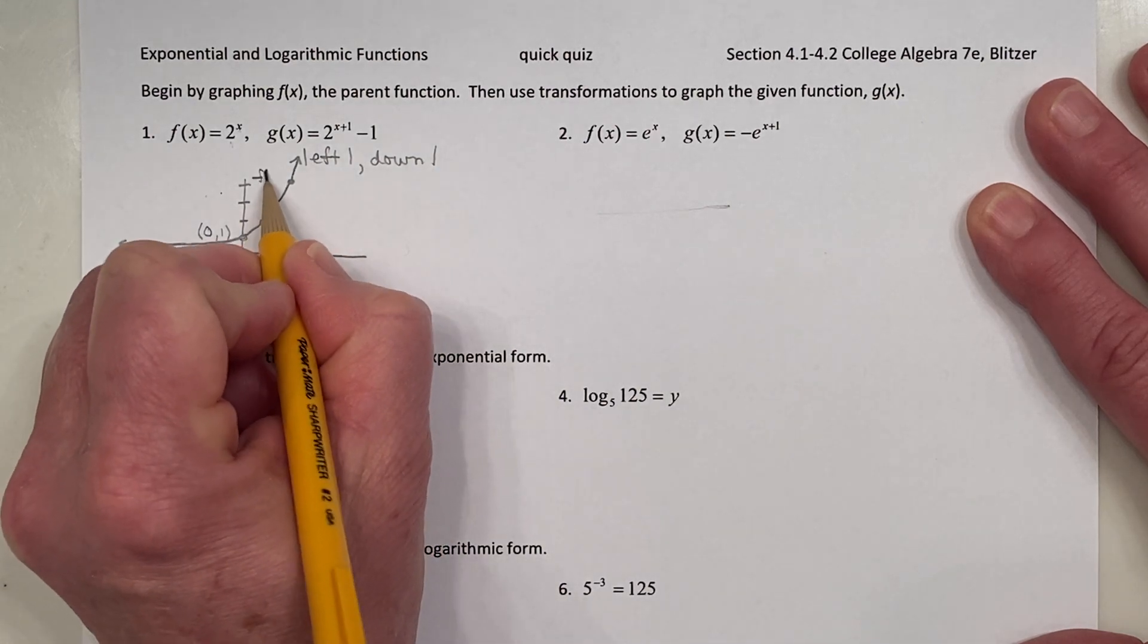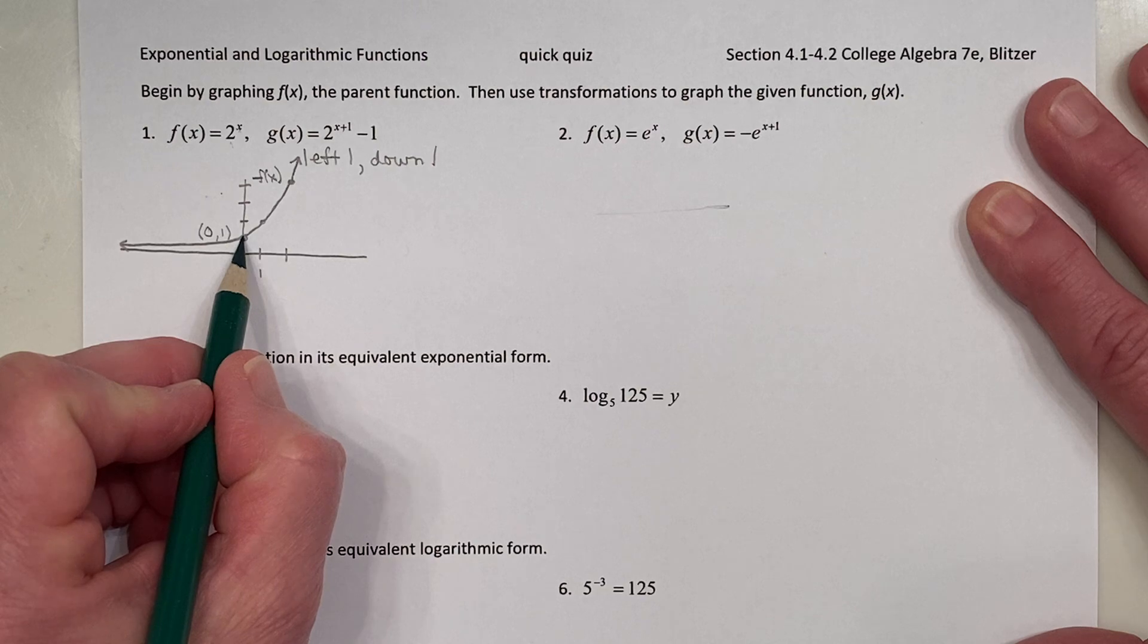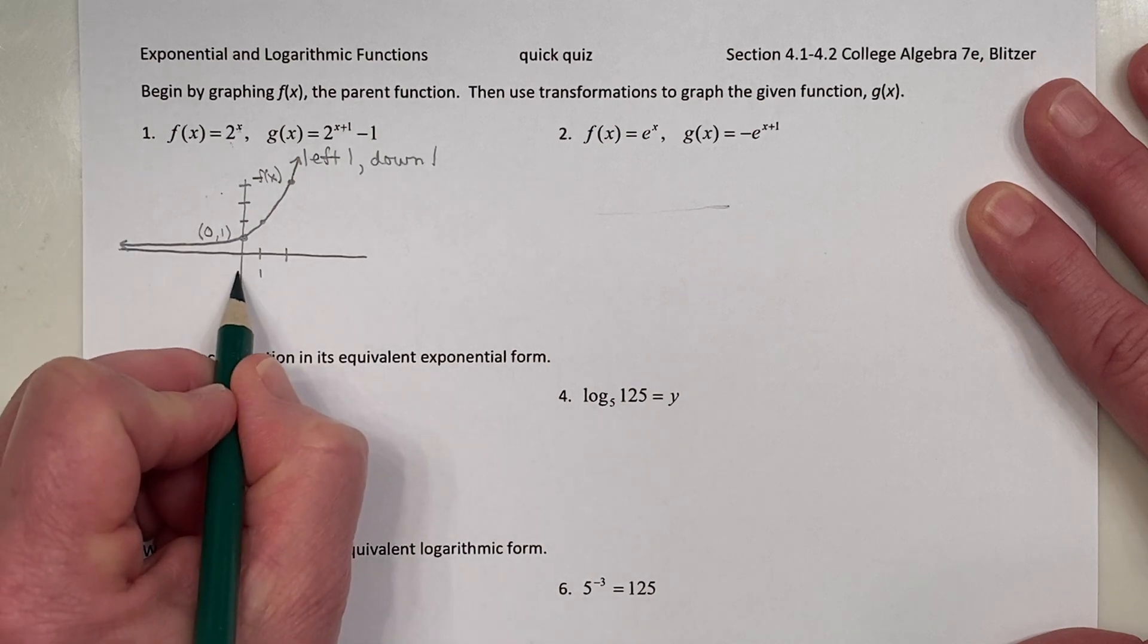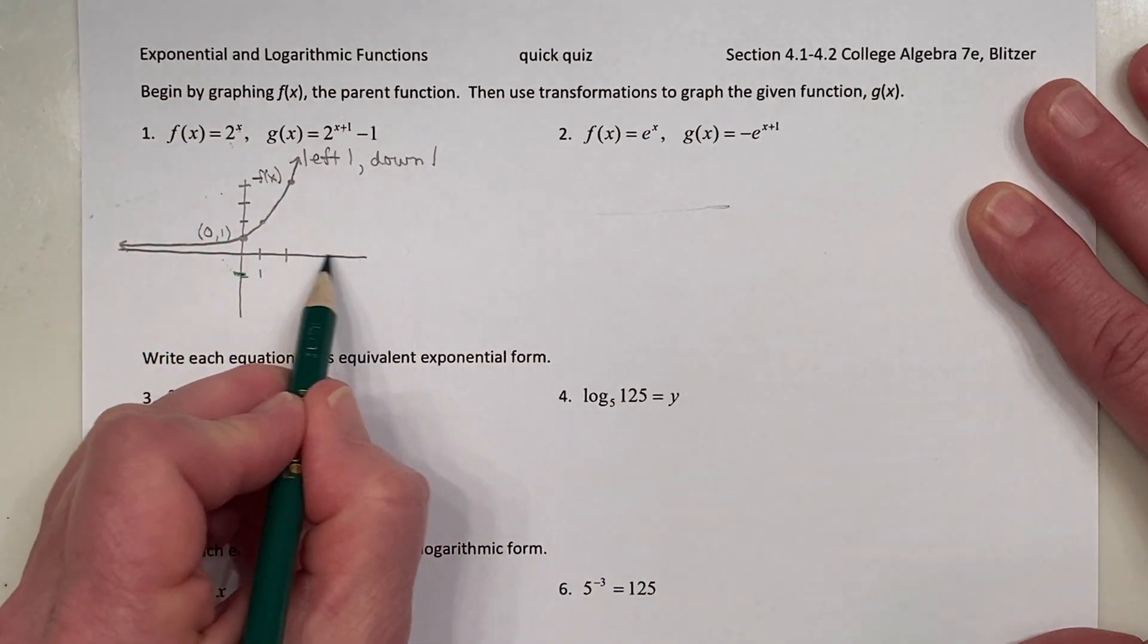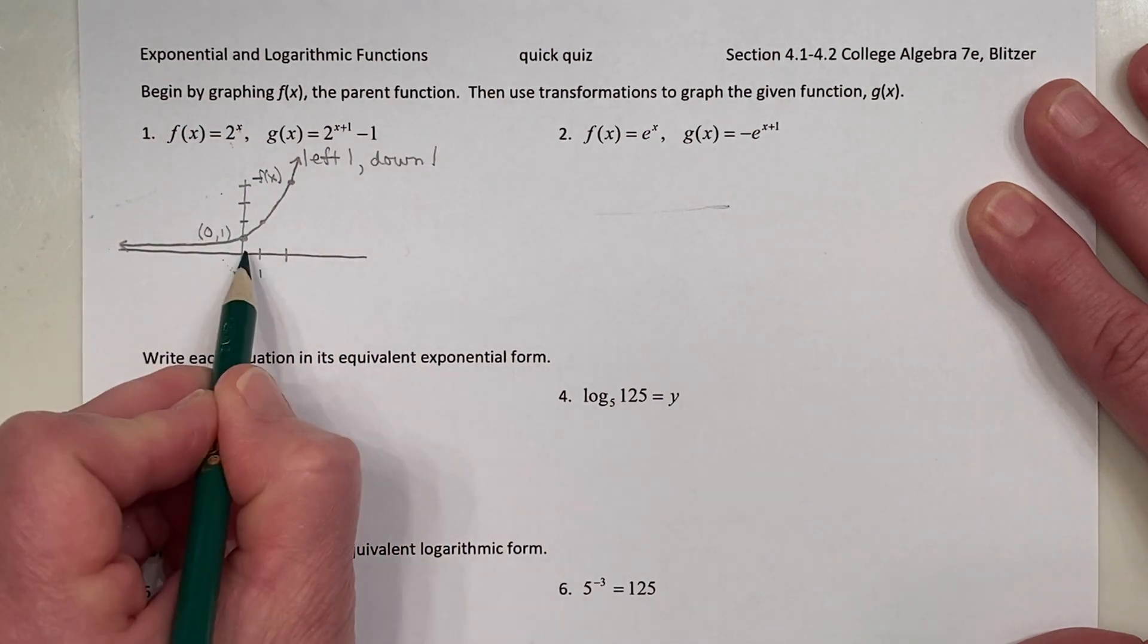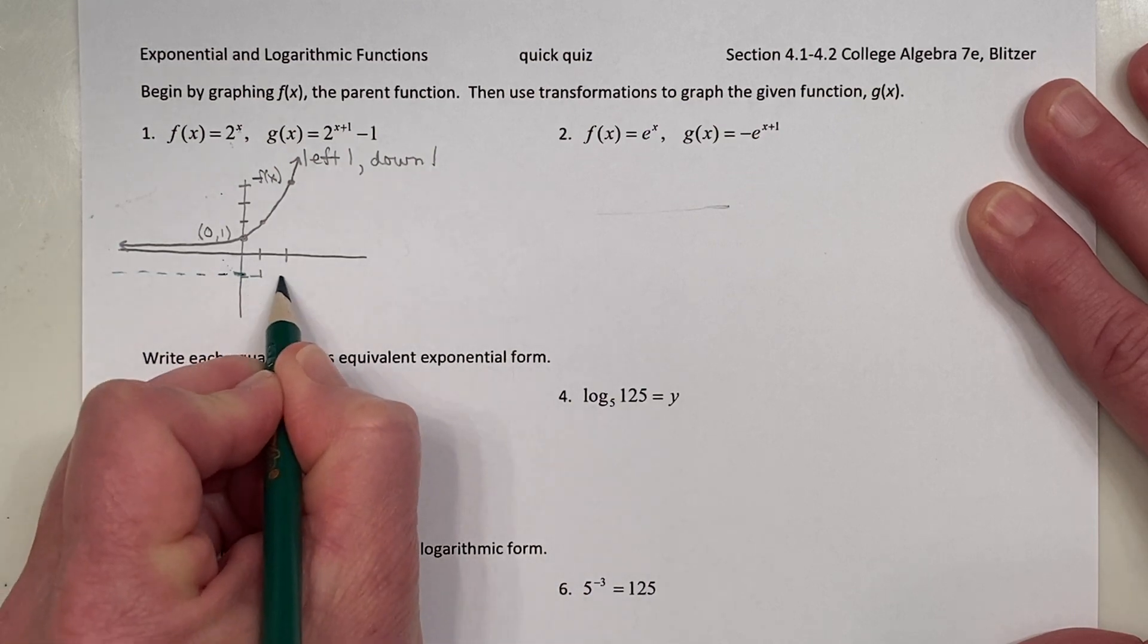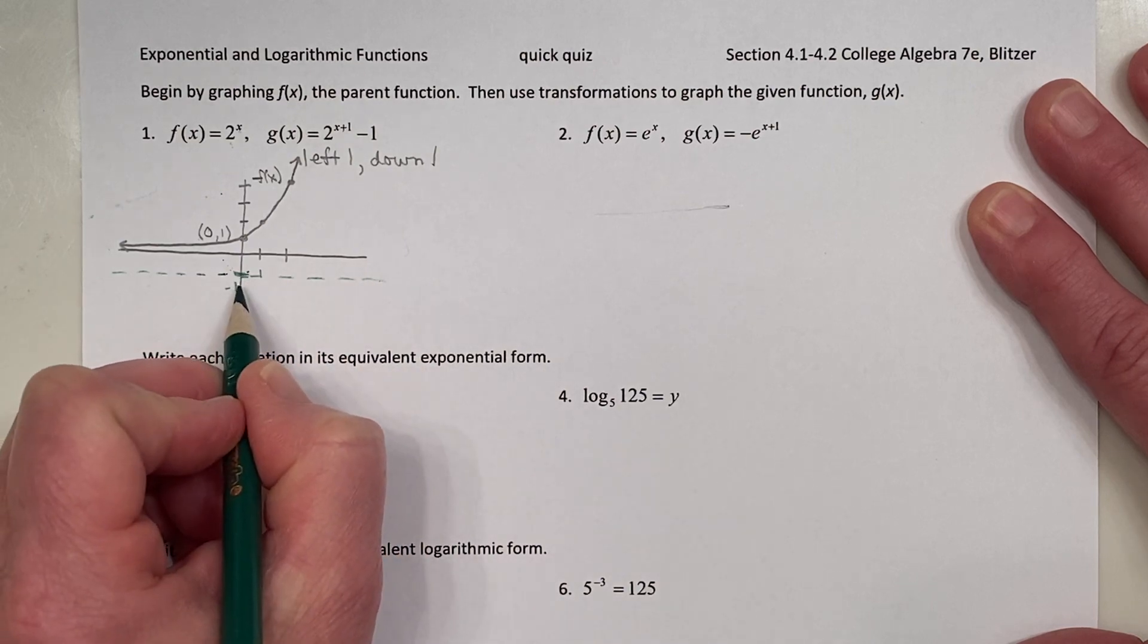You can create a t-chart, but you don't have to. If you remember how to find these values without a t-chart, that's fine. And remembering that the exponential functions have that horizontal asymptote, and the graph goes off the screen like that. So this is our parent function f of x. We're down here at negative 1.